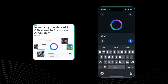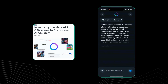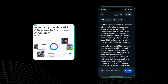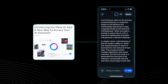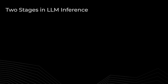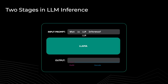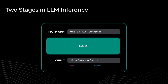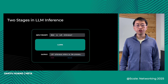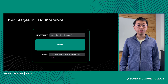We asked it a simple question using the prompt: what is LLAMA inference? The app responds by generating the answer token by token. LLAMA inference refers to the process of generating text or responses based on large language models. A typical LLAMA inference system consists of two stages: the prefill stage and then the decoding stage. The prefill stage takes a prompt sequence to set up the internal context for generating the responses, and then the decoding stage utilizes and updates the context from the prefill stage to generate the output token step by step.